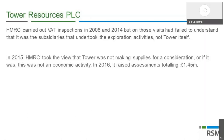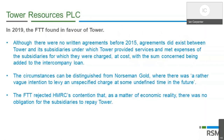This case originally stems from 2019 when the First-Tier Tribunal found in favour of Tower. Although there were no written agreements before 2015, agreements did exist between Tower and its subsidiaries under which Tower provided services and met expenses of the subsidiary, charged by adding to the intercompany loan. The tribunal also found the circumstances could be distinguished from the earlier Norseman Gold case, where there was a vague intention to levy unspecified charges at some undefined point in the future. The FTT rejected HMRC's contention that there was no obligation for the subsidiary to repay.